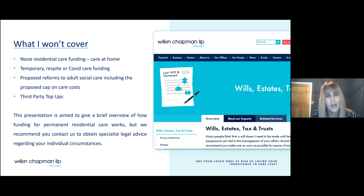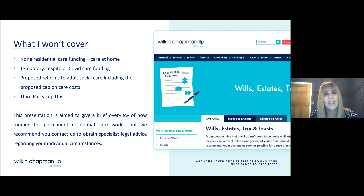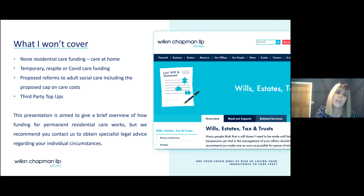This is not a full cover of everything to do with care funding. Unfortunately I won't be able to cover non-residential care funding, care received at home, rules relating to temporary respite or COVID care funding, and third-party top-ups. We're also not going to touch upon the proposed reforms to adult social care, which includes the proposed cap on care costs of around £86,000 — that won't be coming into force until 2023. This presentation gives a brief overview of how funding for permanent residential care works, and we recommend contacting us for specialist legal advice regarding your individual circumstances.